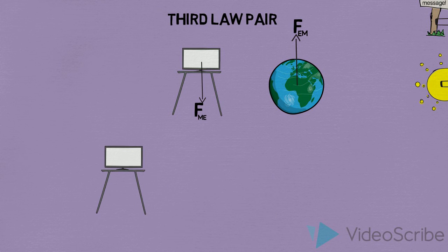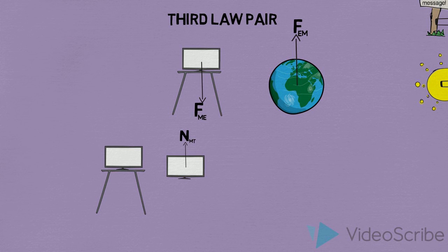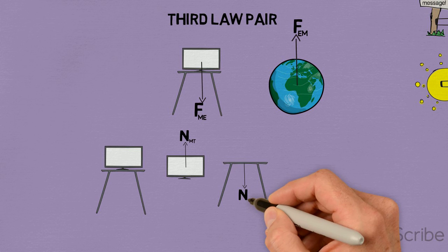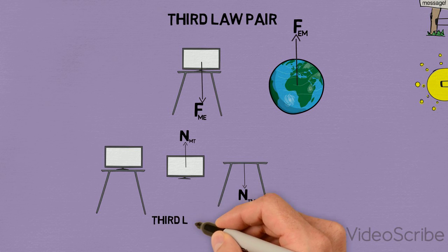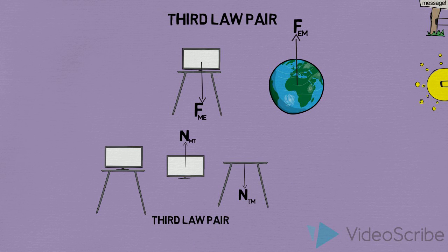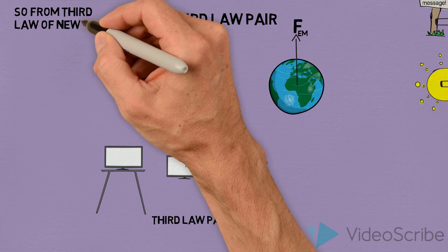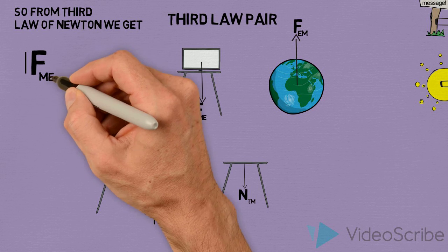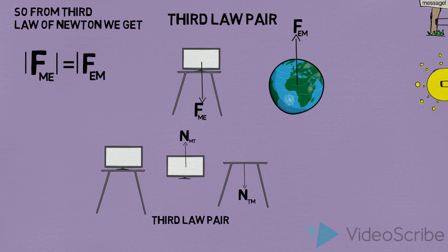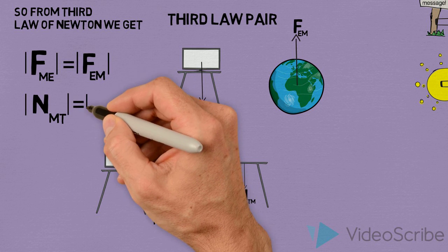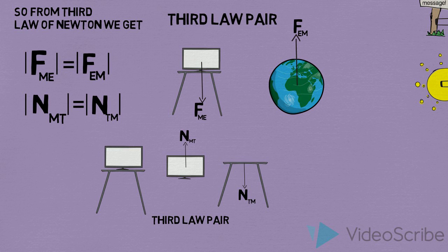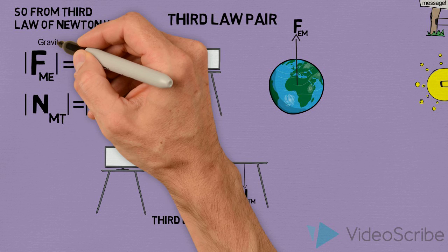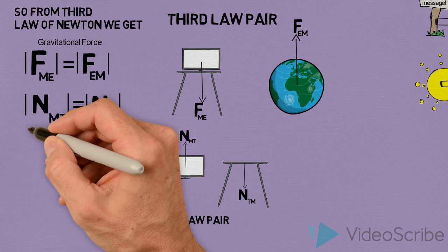Coming back to the monitor and table example — there is another force: the normal force upward on the monitor due to the table. The third law pair for this is the normal force on the table due to the monitor, acting in the opposite direction. Both are normal forces, acting in opposite directions, of equal magnitude. So the force on the monitor due to the earth equals the force on the earth due to the monitor, and the force on the monitor due to the table equals the force on the table due to the monitor.